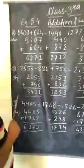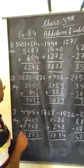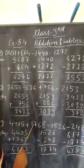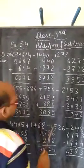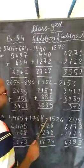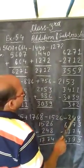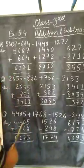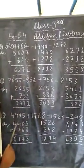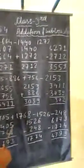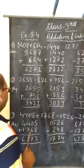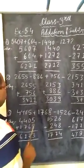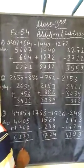In question number 3, positive number 4405 plus 1680 is positive number. 1526 is negative number and minus 240 is negative number. When we add the positive number 4405 with 1768, after adding the number we get 6173.